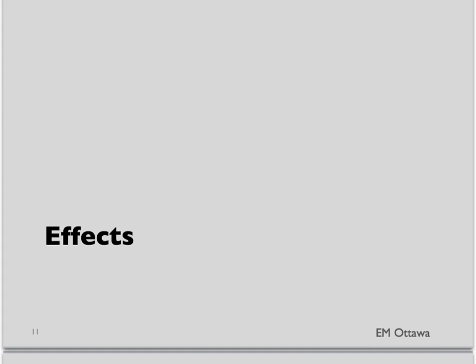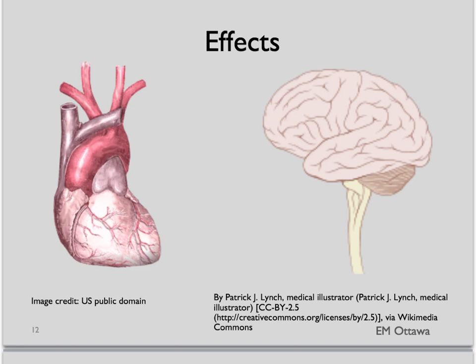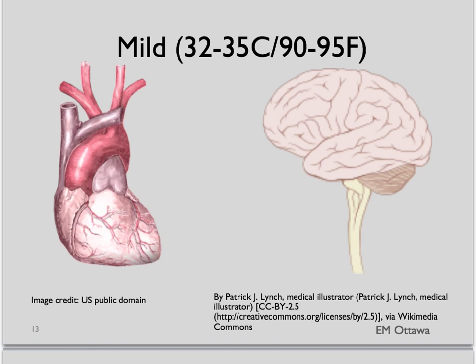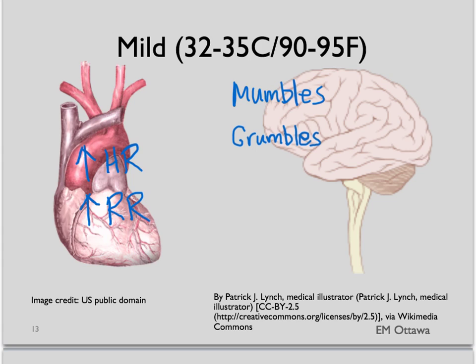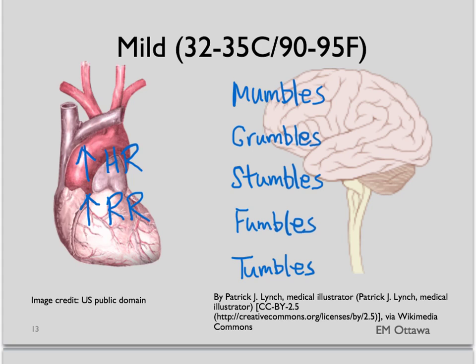What happens with hypothermia? The effects are mainly in the heart and the brain, and these are worse as you get to a lower temperature. Mild hypothermia is defined as 32 to 35 degrees Celsius. The heart rate goes up, hyperventilation occurs. Neurologically, there are changes in speech, judgment, gait, fine motor skills, and gross motor skills. The muscles start to shiver. This is mild hypothermia.